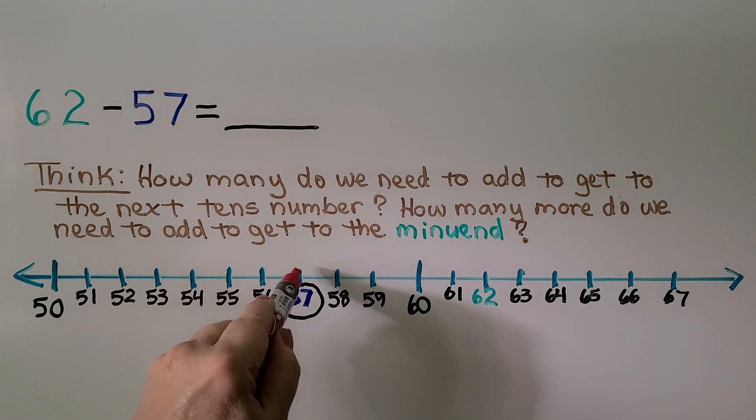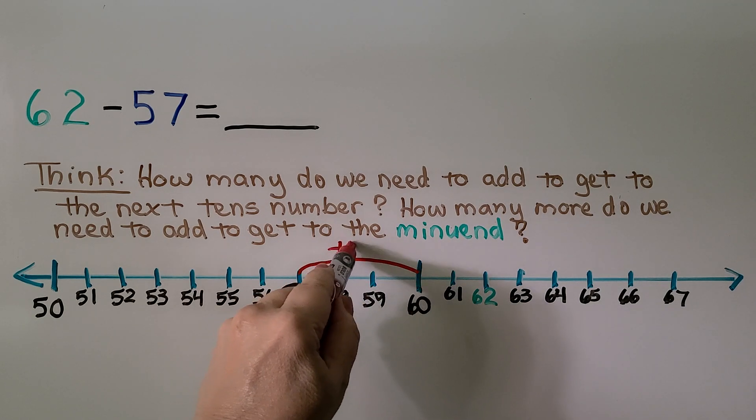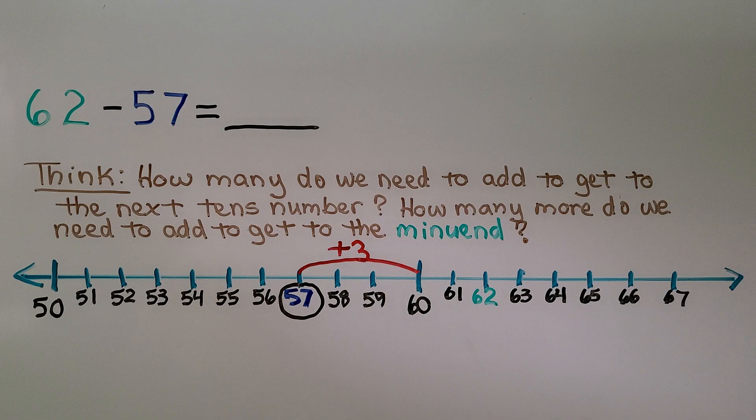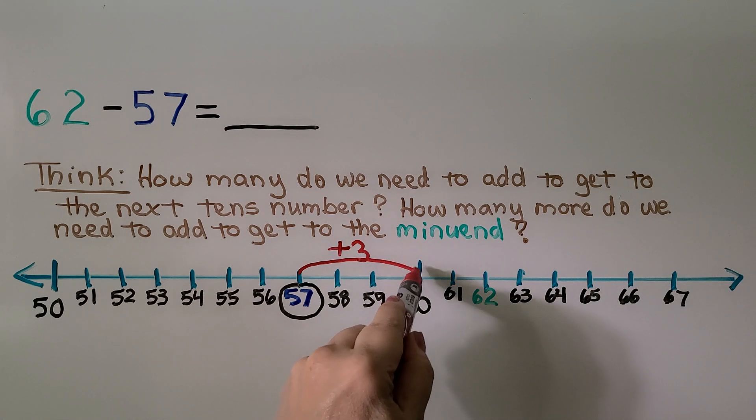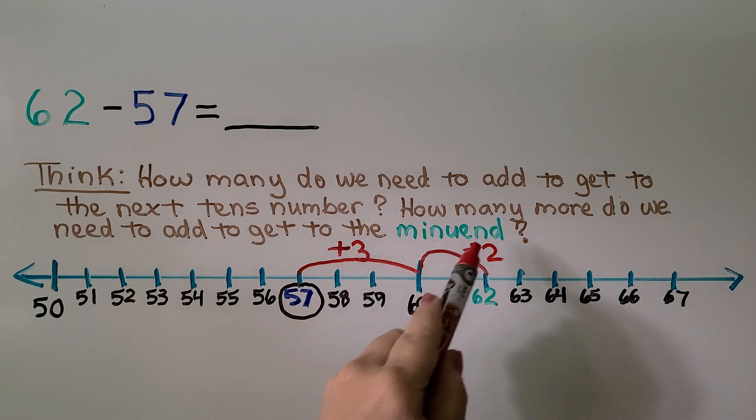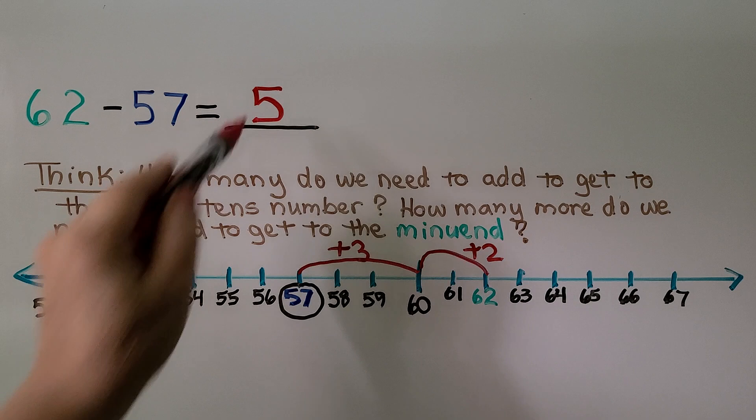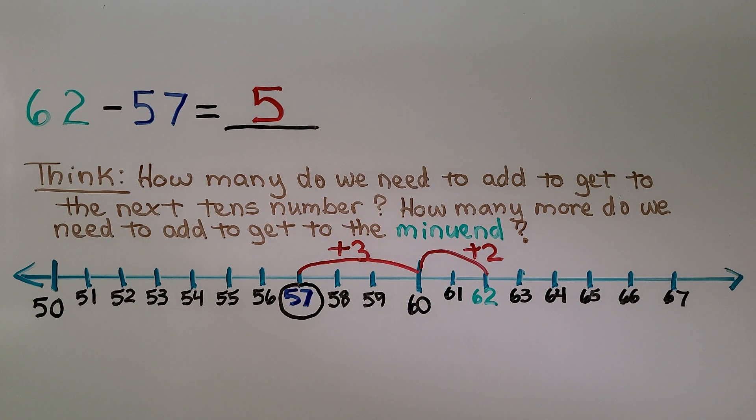We need to jump 3. Now we think, how many more do we need to add to get to the minuend 62? We need to jump 2 more. That means we jumped a 3 and a 2. 3 plus 2 is 5. So 62 minus 57 is equal to 5.